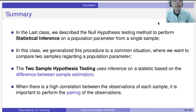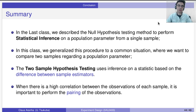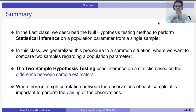In the last class, we described the new hypothesis testing method to perform statistical inference on a population parameter from a simple sample. In this class, we generalize this procedure a little bit more when we want to compare two samples regarding a population parameter. We showed that when dealing with two samples, we just modify the hypothesis sampling tests very easily. We do the sample test on the difference between the estimators. We also talked about when there is a high correlation between observations, it's important to perform the pairing of the observations.